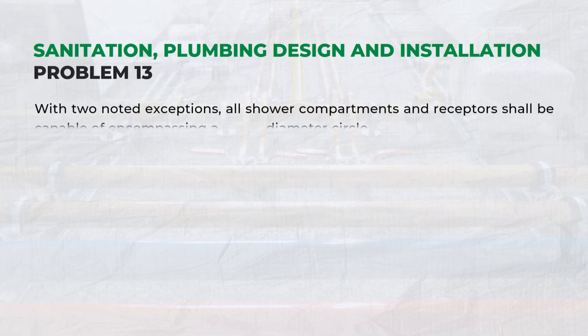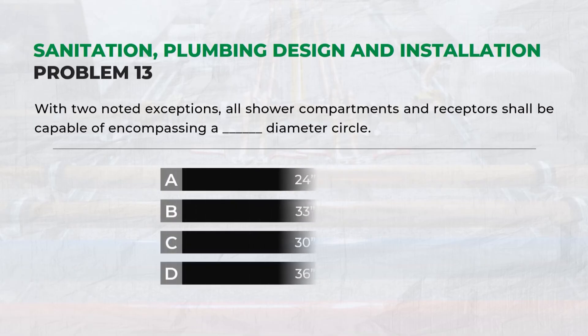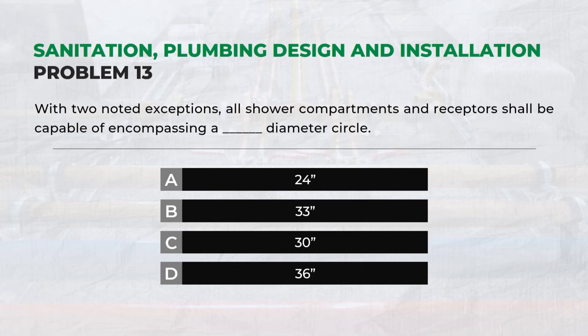With two noted exceptions, all shower compartments and receptors shall be capable of encompassing a diameter circle — Answer: B. 33 inches.